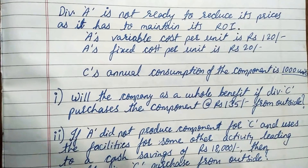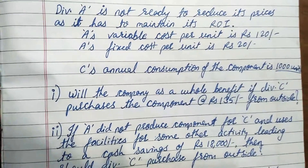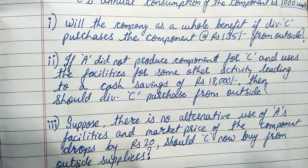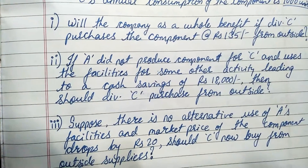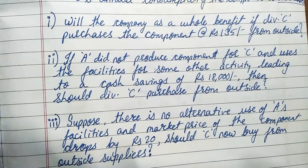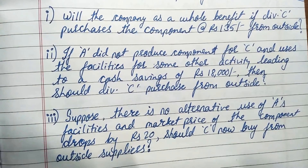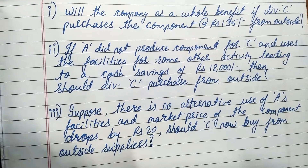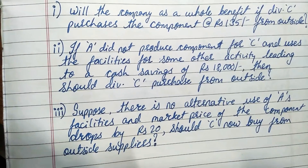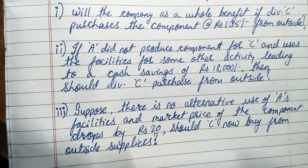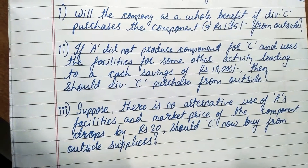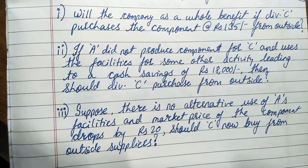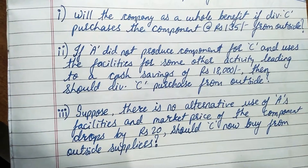The purchase order will be for 1000 units. There are three scenarios in this question. First: will the company as a whole benefit if division C purchases the component at 135 rupees from outside instead of from A? Second: if A did not produce the component for C and uses its facilities for some other activity leading to a cash saving of 18,000 rupees, should division C purchase from outside? This means A is not producing the component, so variable cost is saved, and additionally A's facilities generate a cash saving of 18,000 rupees.